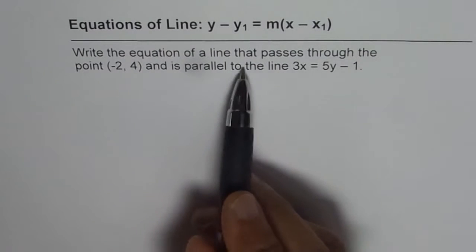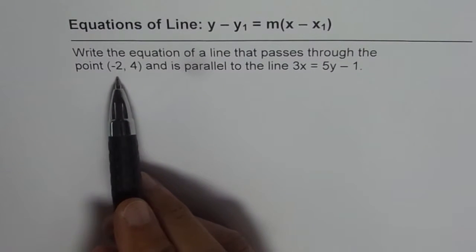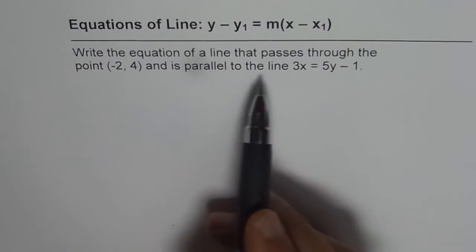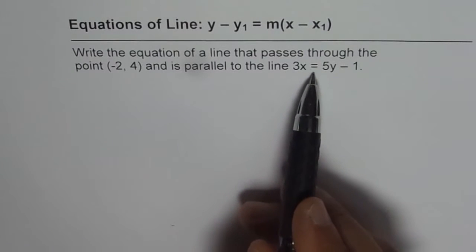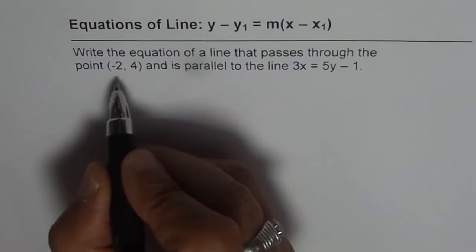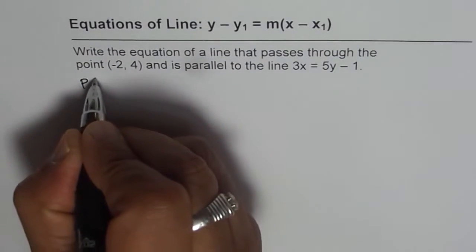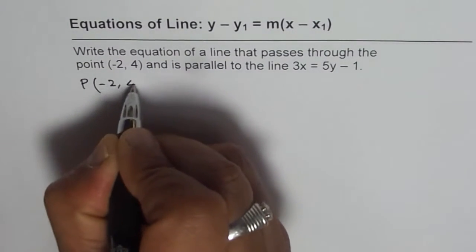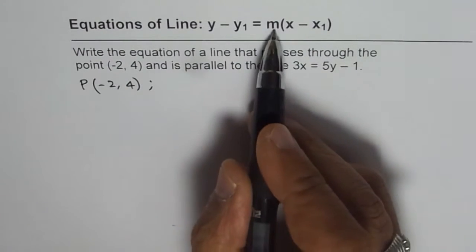Write the equation of a line that passes through the point minus 2, 4 and is parallel to the line 3x equals to 5y minus 1. Now we know the point which is minus 2 and 4, now we need to find slope.